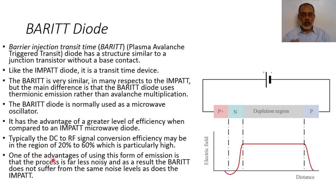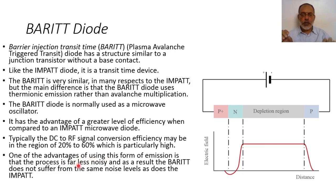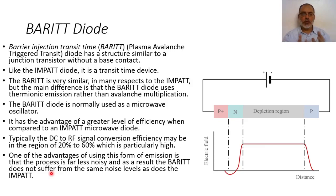One of the advantages of using the BARITT diode is that it is far less noisy, as a result of not suffering from the same noise level as the IMPATT diode due to avalanche breakdown.